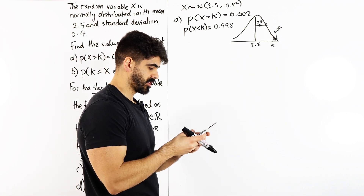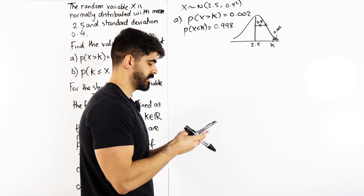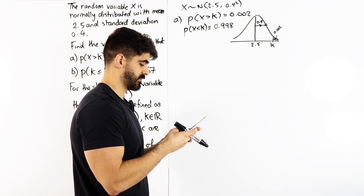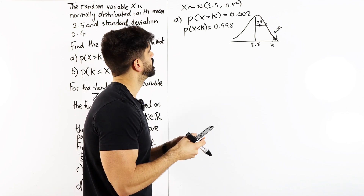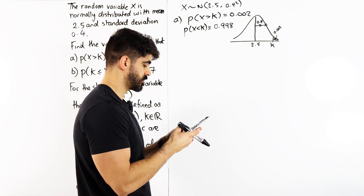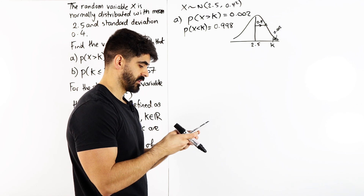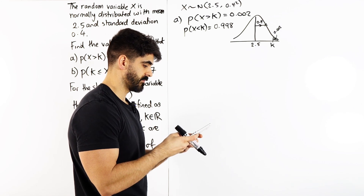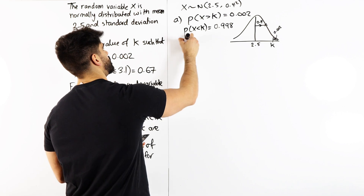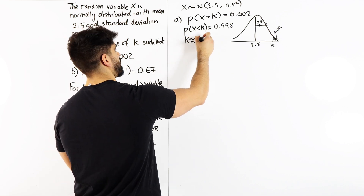Now we use our inverse normal. Go menu, 7, number 3 for inverse normal. My area is 0.998, sigma is 0.4, and mu is 2.5. So k in this case is 3.65.